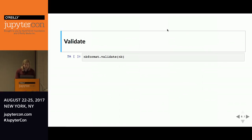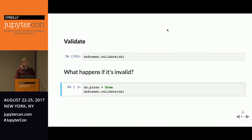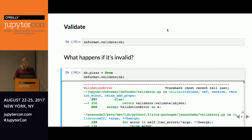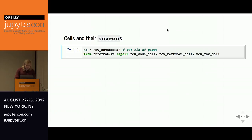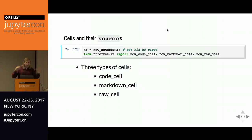To verify a notebook, we call nbformat.validate, and if nothing happens, that's exactly what we want to see. If it were invalid — say we wanted to put pizza in the notebook — we get back a validation error. Now, to start adding cells, we use the nbformat v4 submodule, which has new_code_cell, new_markdown_cell, and new_raw_cell methods to create code cells, markdown cells, and raw cells.